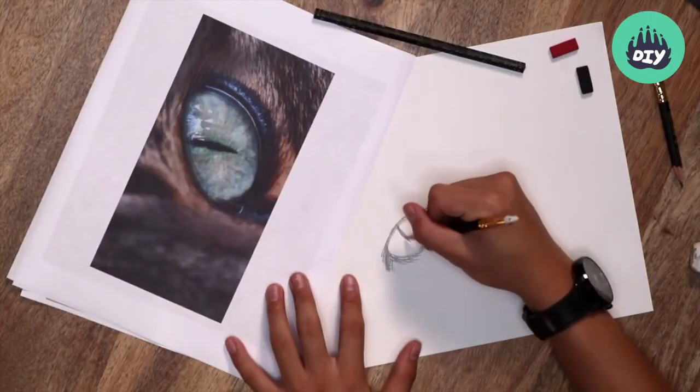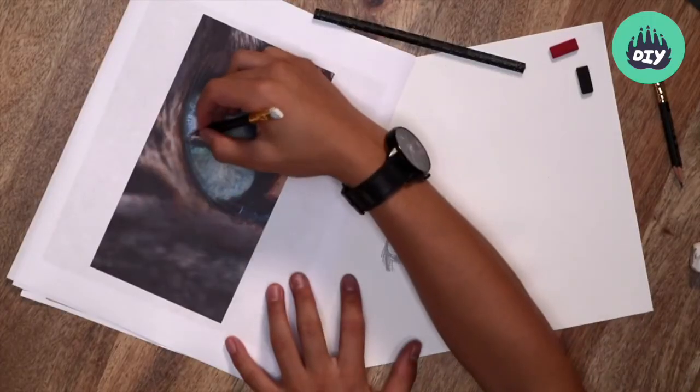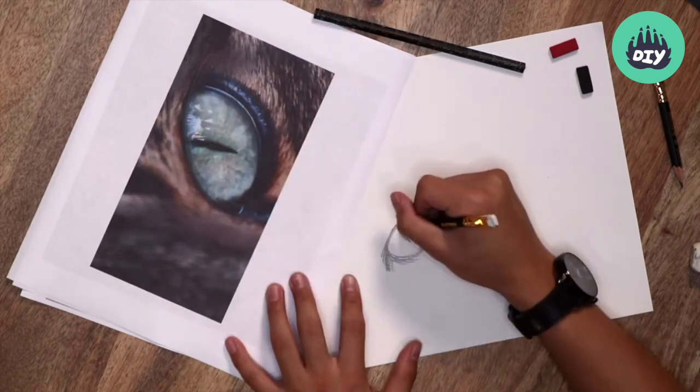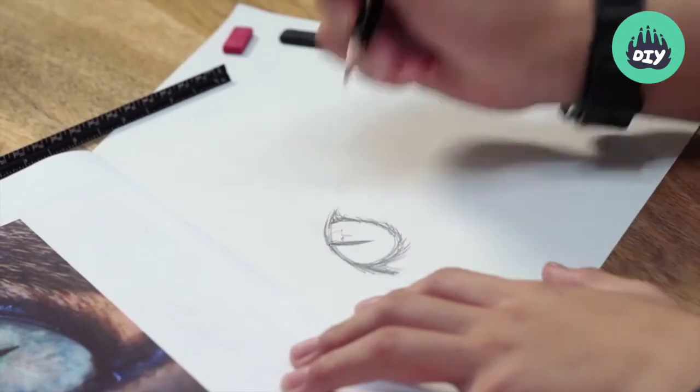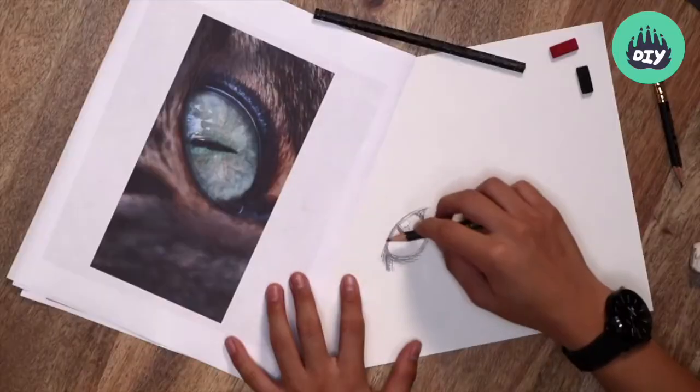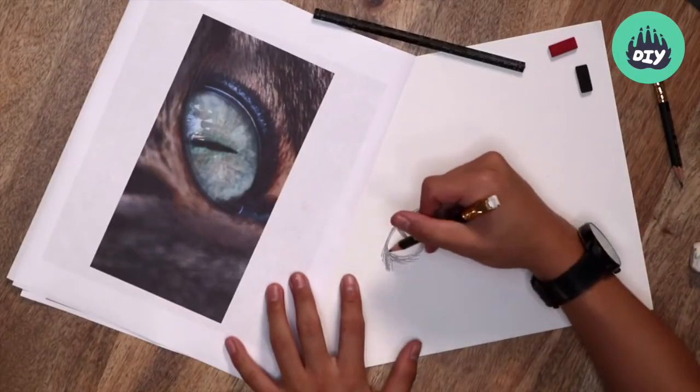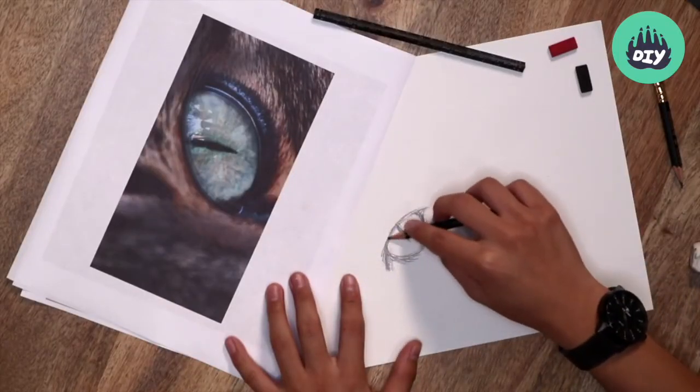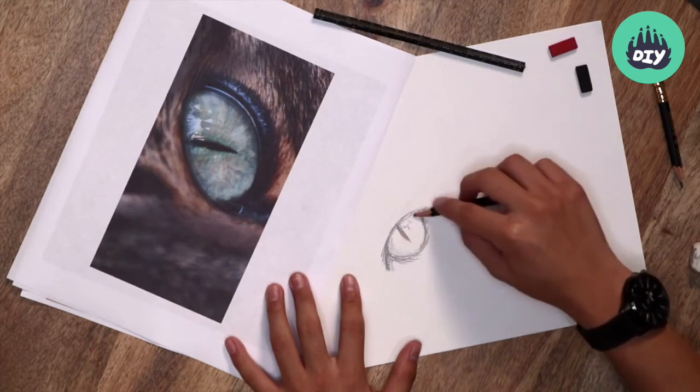And if we want to start detailing the eye just a little bit more, some key points are the reflections of the eyes. So mapping in these kind of shapes. And it's a sphere. The eyeball is a sphere. So you can lightly shade in the spherical shape of the eyeball.